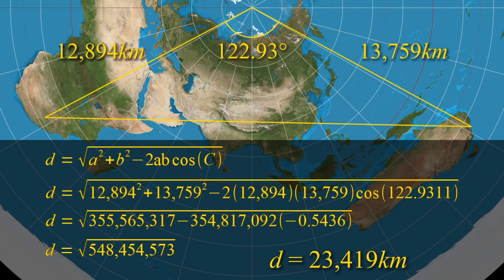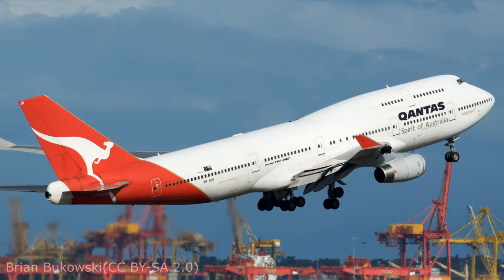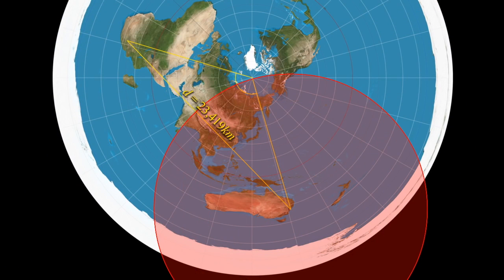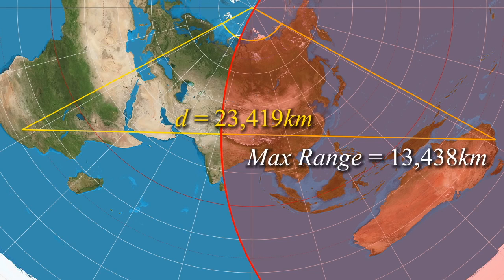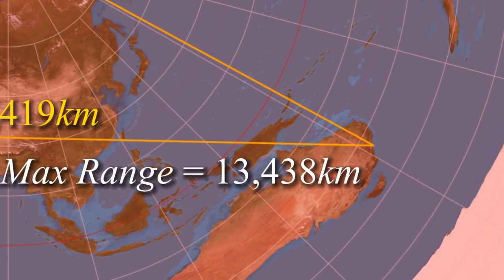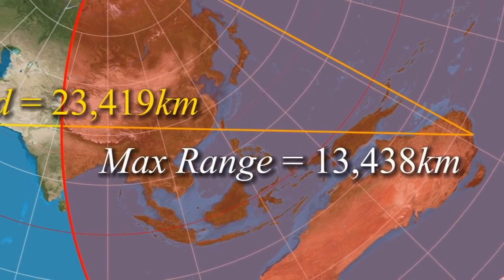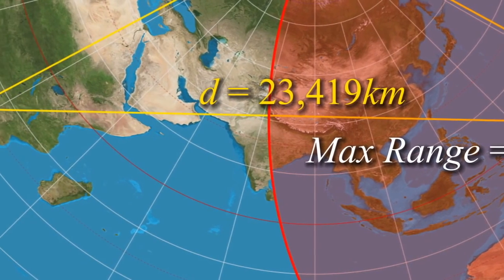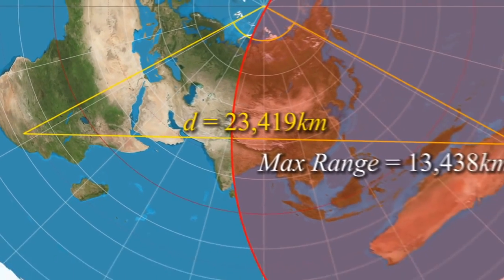For the Boeing 747-400s that Qantas use on this route, this poses something of a problem. With maximum payload they have a maximum range of 13,438 kilometres, which means they would fall rather short of their intended destination, which somewhat defeats the purpose of a direct flight. Fear not though — the route taken by the Flat Earth Airways flight would pass over Papua New Guinea, China, the Himalayas, India, the Gulf of Oman, the Arabian Peninsula, the Gulf of Aden, the countries of East Africa, including a nice view of Lake Malawi, so could refuel along the way.